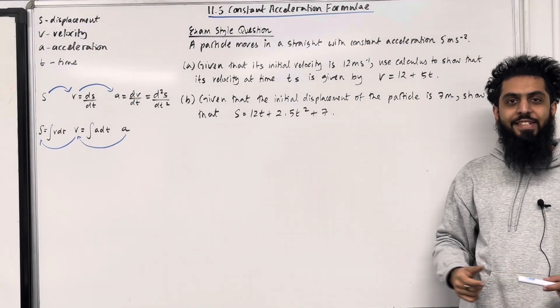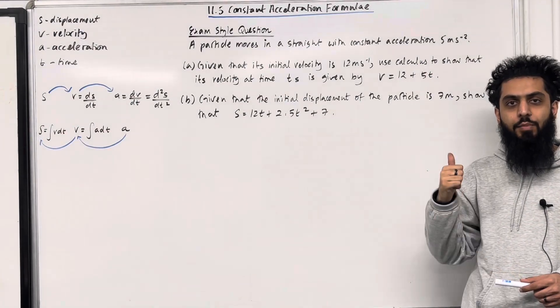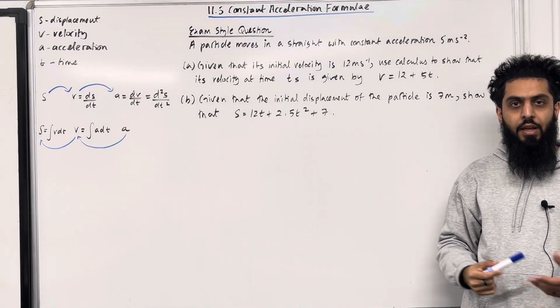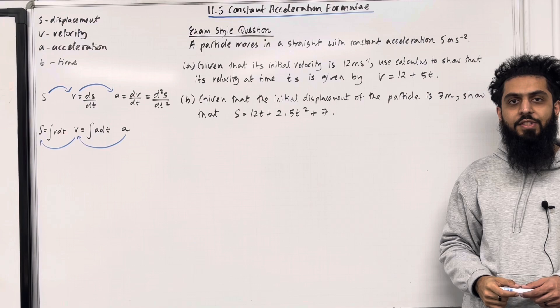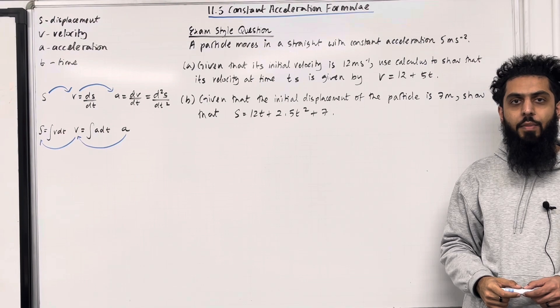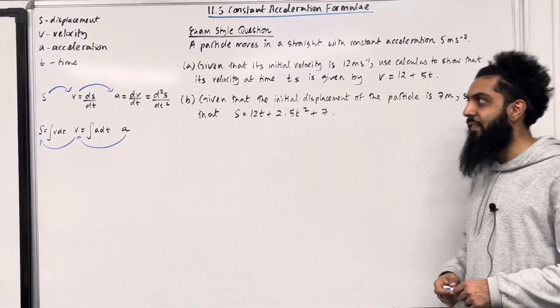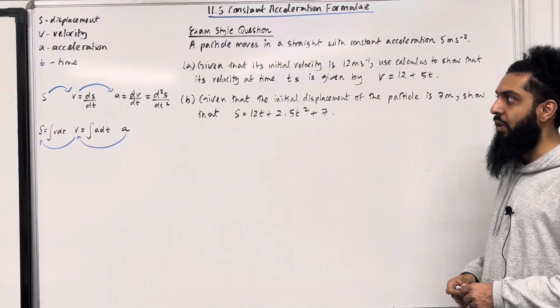Welcome back. In this teaching video, I'll be looking at 11.5 constant acceleration formally. 11.5 represents chapter 11, section 5 of the Pearson A-level Maths Applied Maths Year 1 textbook. Let's have a look at the key facts of this section.